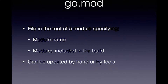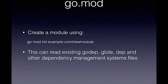Go modules are basically specified by a go.mod file, which is a file in the root of your Go project. It specifies the name of the module and all the modules that are included or used inside of your module. It can be updated by hand or by tools — a lot of times by tools. To create one it's very simple: you go to a new directory, type go mod init with the name of your module, which you usually do with a URL-style package name. Most people use GitHub there.